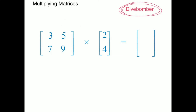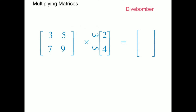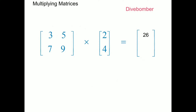Rows dive bomb columns. The first row — the 3 and the 5 — they start to move, then rotate and dive bomb the column in the second matrix. We've matched up the rows and the columns and we get 3 times 2 plus 5 times 4, which is equal to 26. This 26 now becomes the first element in the resultant array, and because it's the multiplication of row 1 times column 1 it ends up being row 1 column 1 in the answer matrix.